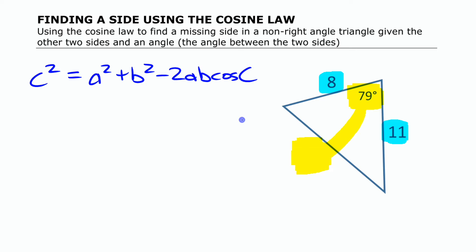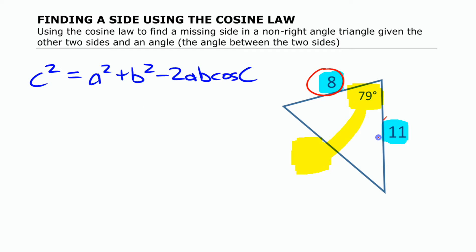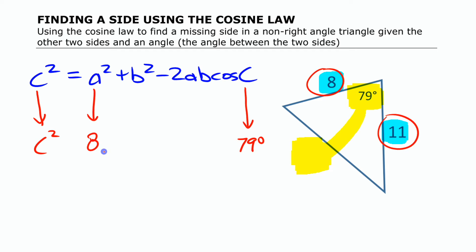So if we're going to fill this in, it doesn't matter what we put for A and B — it can be either 8 or 11 for either one. But the key one here is C, which is what we're looking for: C squared. So this angle has to be 79 degrees, and we'll say A is 8 and B is 11. That gives us: C squared equals 8 squared plus 11 squared minus 2 times 8 times 11 times cosine of 79 degrees.